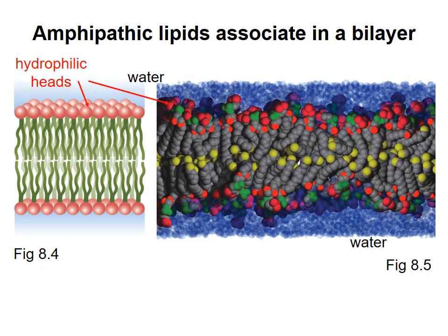The hydrophilic head groups are on the outside of the bilayer, making favorable contacts with water, while the hydrophobic tail groups are in the middle, protected from water.